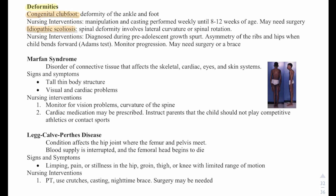Then we have idiopathic scoliosis, a spinal deformity that involves lateral curvature or spinal rotation. It is typically diagnosed during the pre-adolescent growth spurt. Asymmetry of the ribs and hips when the child bends forward — called the Adams test — is a key sign. Providers monitor progression, and the child may need surgery or a brace.